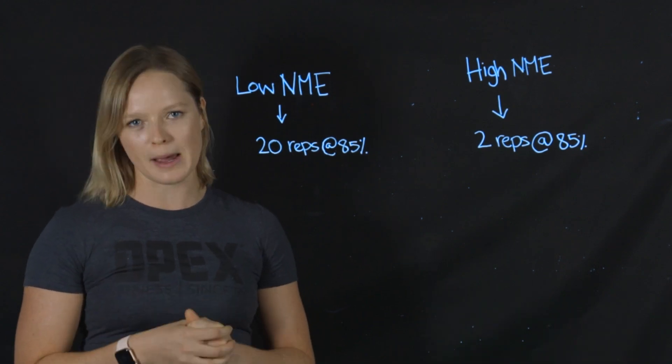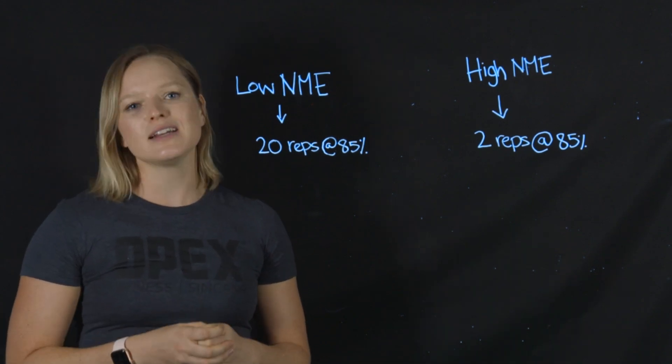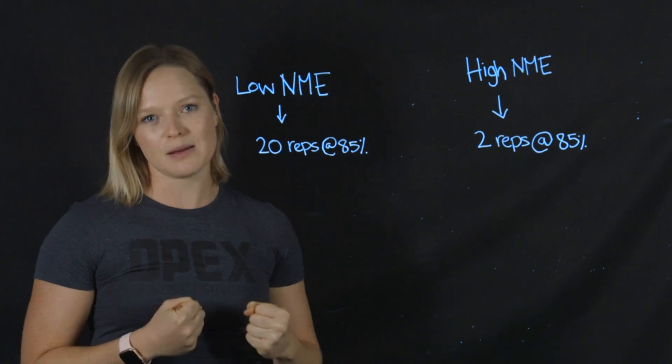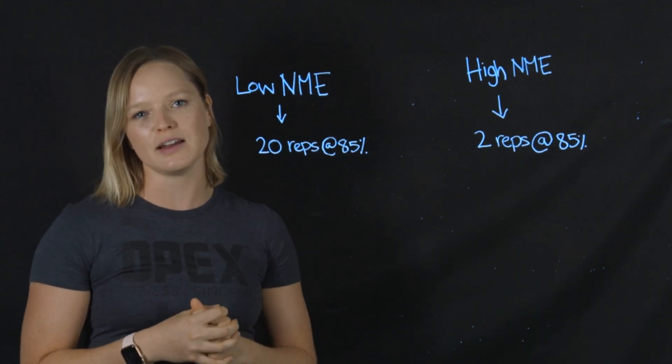First of all, what is neuromuscular efficiency? Basically, it is our ability to dig deep. How deep can that person go into the nervous system to complete the task at hand? The way that we test this at OPEX is with a back squat test.